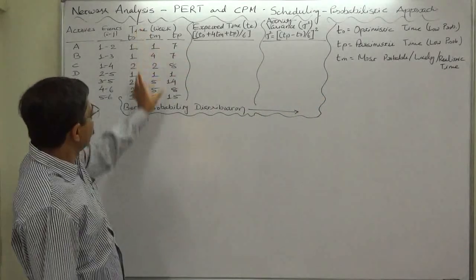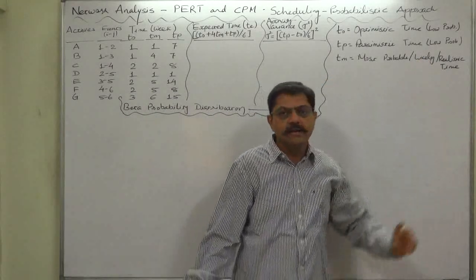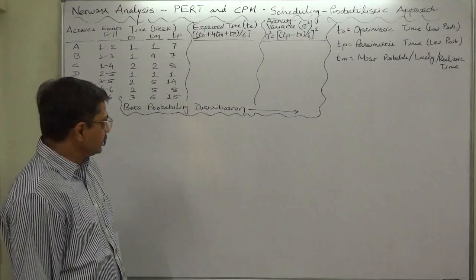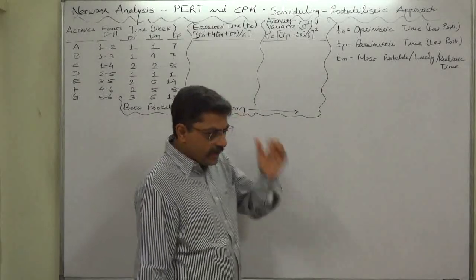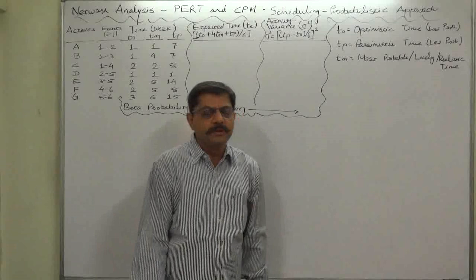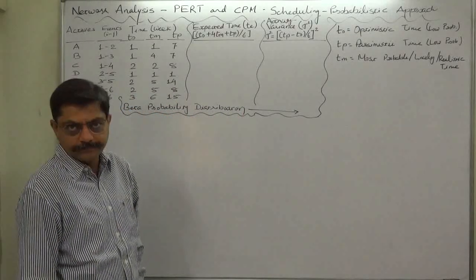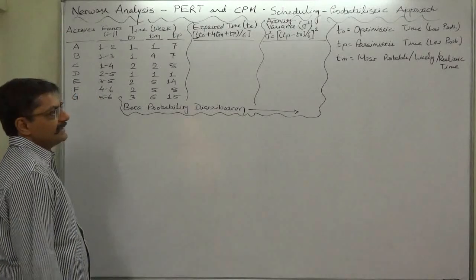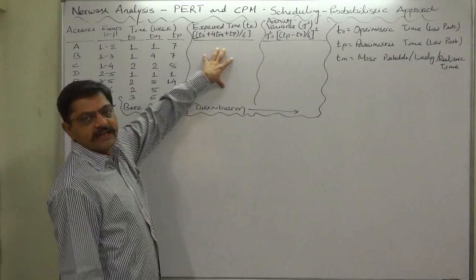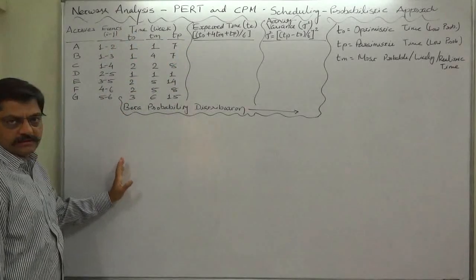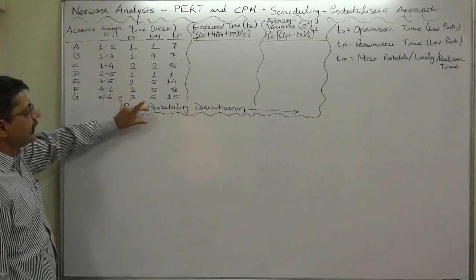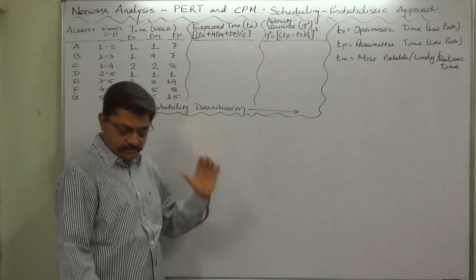The third and middle estimate is TM, the most probable, most likely, or most realistic time, which has the highest probability of occurrence according to the beta probability distribution. On average, the probability of TM is 4 times the probability of optimistic time and pessimistic time. On the basis of these conclusions of beta probability distribution, we can arrive at an expected time for each activity — what time duration can we expect to complete a particular activity if we believe the time follows the beta probability distribution.